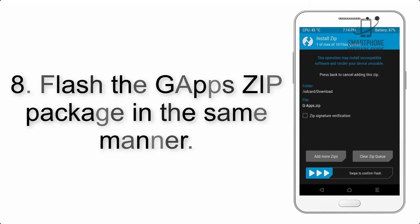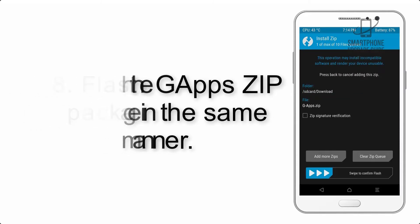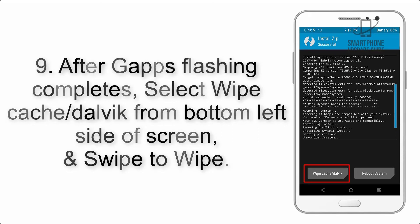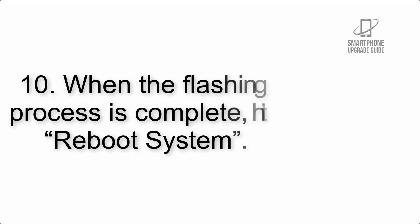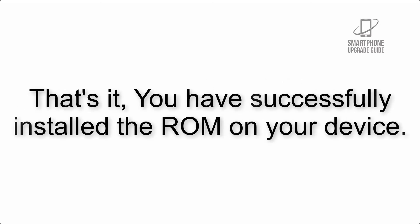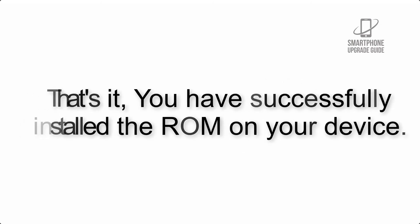Step 8: flash the GApps zip package in the same manner. Step 9: after GApps flashing completes, select Wipe Cache and Dalvik from the bottom left side of the screen and swipe to wipe. Step 10: when the flashing process is complete, hit Reboot System. That's it — you have successfully installed the ROM on your device.